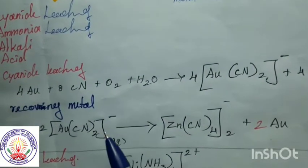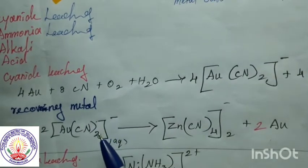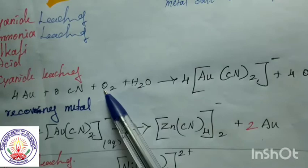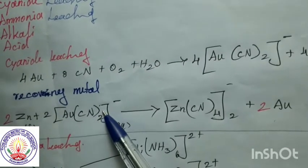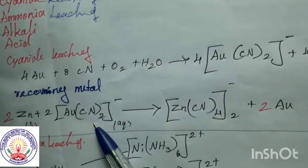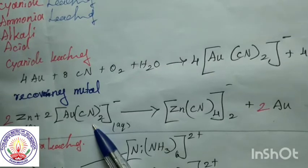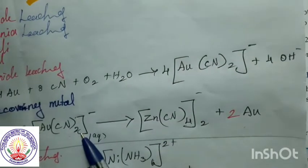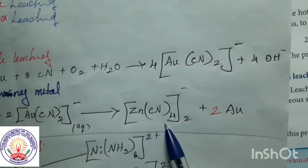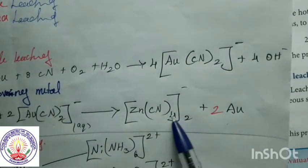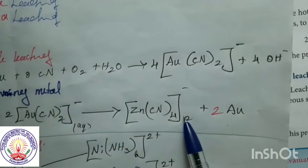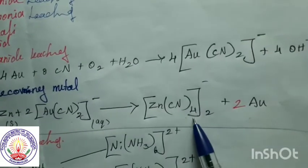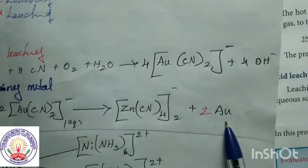To get pure metal, we are recovering it by treating with deoxygenated leaching. We first treated with aerated (oxygenated) solution; now to recover the pure metal, we treat again with deoxygenated leaching using zinc. We have zinc plus the gold complex without oxygen, and we get zinc complex with CN2 and CN4. To balance the equation we take 2 zinc, giving us 2 gold.